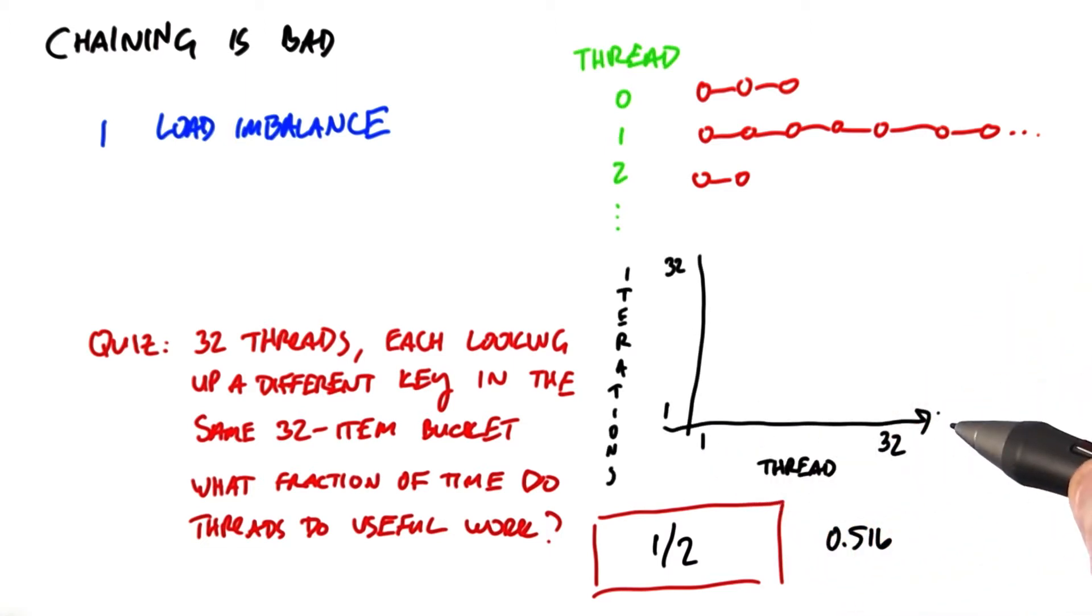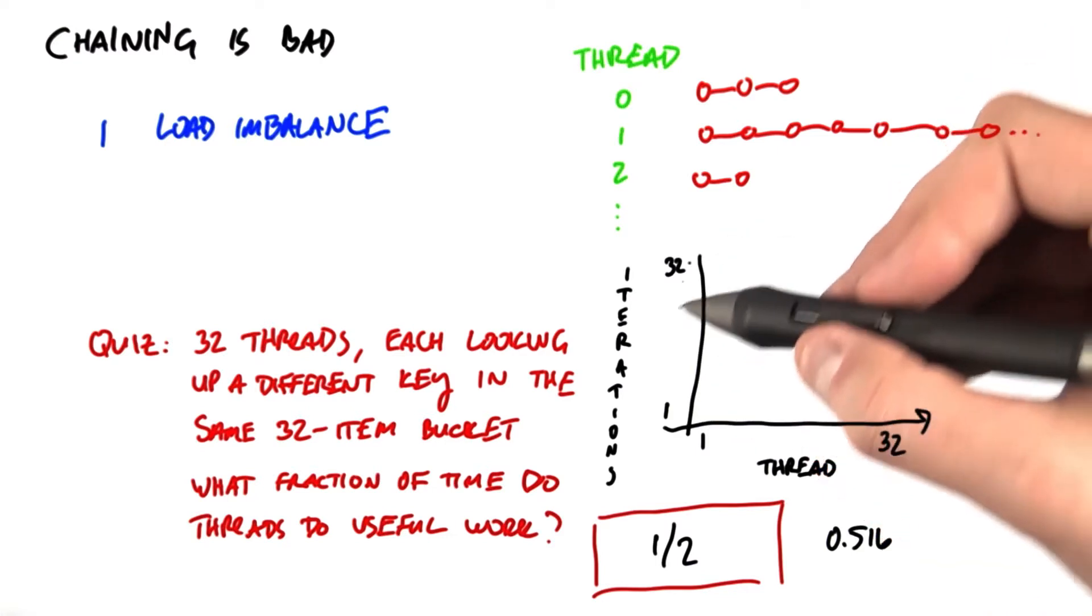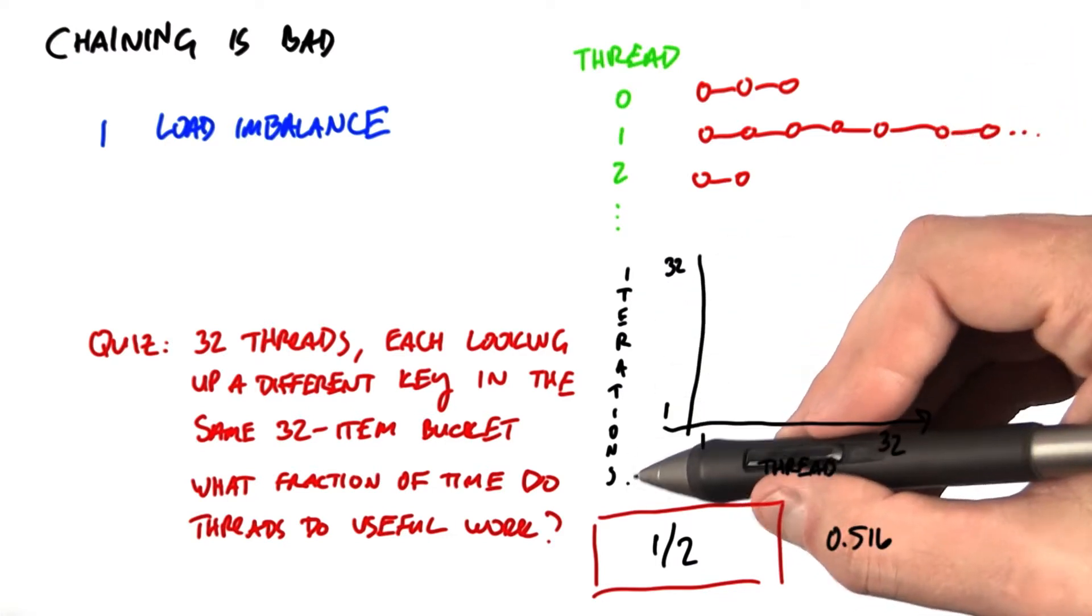So we've got 32 threads here, I'm putting them on the x-axis, and then on the y-axis is the number of iterations.